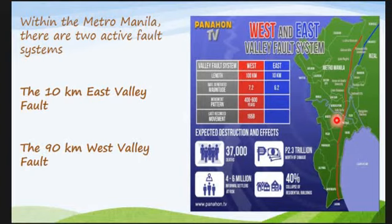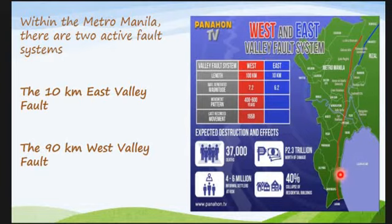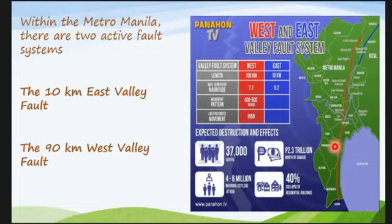Once it releases its energy, everything in the area will be devastated. Expected disruption and effects include 37,000 possible deaths, 4.6 million informal settlers affected, 2.3 trillion pesos worth of damage, and 40% of buildings in the area could collapse. Imagine how devastated this area would be once an earthquake occurs here.